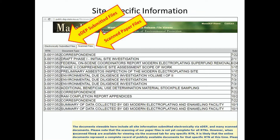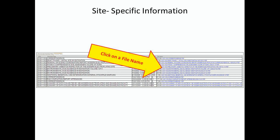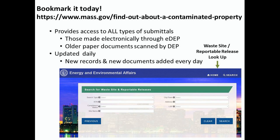Anything received before 2009 would have come in on paper and would have been scanned. The list of scanned files presents itself a little differently, because there aren't any transmittal forms that go along with it. But you can click on one of the document names and bring up an image of the paper document that was submitted to DEP in the past, including documents going back to the early 1980s. So make sure you go back and bookmark these pages, because it's an incredibly useful tool that will give you access to all types of submittals that have come into DEP, whether submitted electronically through eDEP or the old paper documents. The MassDEP Searchable Sites List is your place for one-stop file review, regardless of where you are.